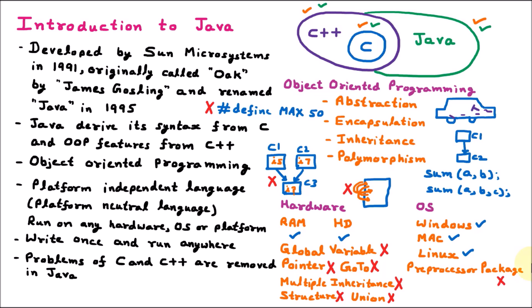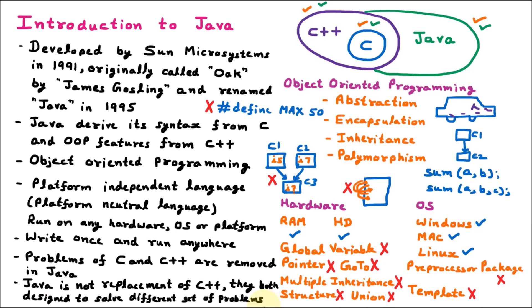In C++, we have templates, but in Java we don't have templates. So we can say that Java has removed all the problems of C and C++. We may think that Java is the replacement of C++, but no — Java is not a replacement of C++. The reason is that both are designed for different purposes and they solve different sets of problems. So in Java, all the problems of C and C++ are removed, but still Java is not a replacement of C++.